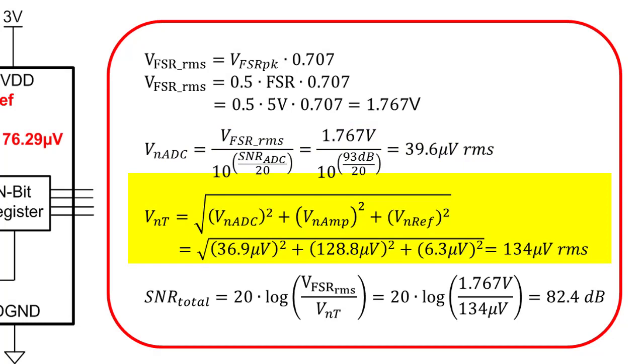Next, we combine the ADC amplifier and reference noise using the square root sum of the squares. In this example, the total noise is 134 microvolts RMS. Finally, if we use the calculated total noise in the SNR equation, we can calculate a modified SNR for the example that includes the amplifier and reference noise. In this example, the modified SNR is 82.4 dB. Thus, the ADC SNR was degraded from 93 dB to 82.4 dB by the amplifier and reference noise. Note that the reference noise was negligible in this case.